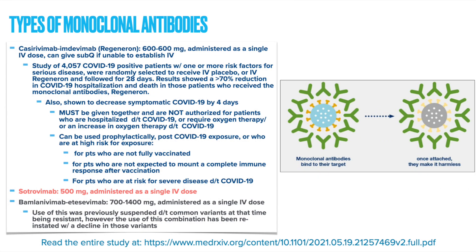So what are some different types of monoclonal antibodies used in the treatment of COVID? There are a few different options available, including Casirivimab and Imdevimab, also known as Regeneron, and also the combination of Bamlanivimab and Etesevimab, which I am definitely seeing more frequently used where I am. And lastly, Sotrovimab.